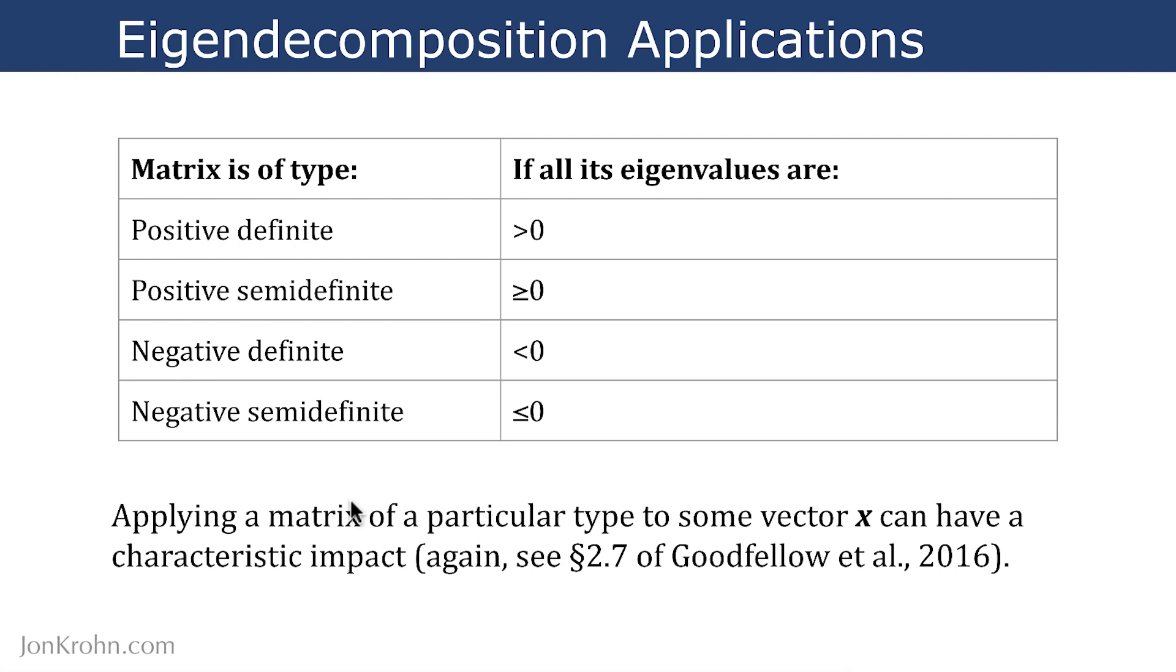As an example of the characteristic impact that a matrix can have, one that we've talked about a couple of times already in this Machine Learning Foundation series is the situation where at least one eigenvalue is 0, which is what we have in the semi-definite case, whether it's positive or negative semi-definite. And recall that in that circumstance, we end up with a determinant of zero and then the matrix is not invertible.